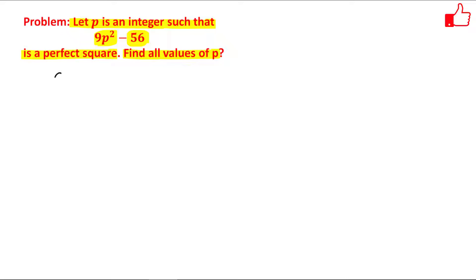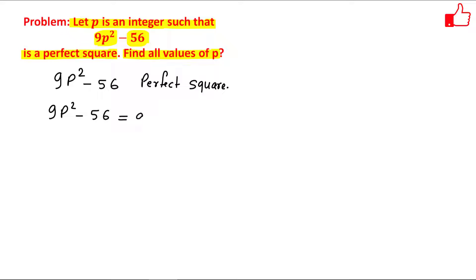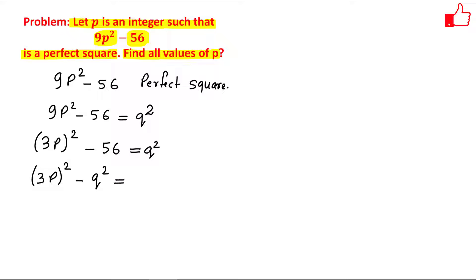The number 9p² - 56 is given to be a perfect square. This means it can be written as a square of some number — let us say q. So we have 9p² - 56 = q². We can rewrite 9p² as (3p)², giving us (3p)² - 56 = q². Taking q² to the left and 56 to the right, this becomes (3p)² - q² = 56.